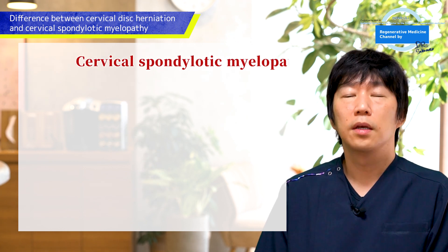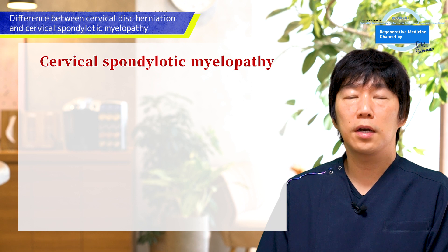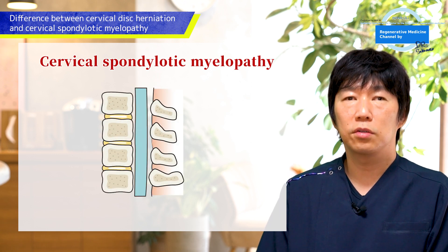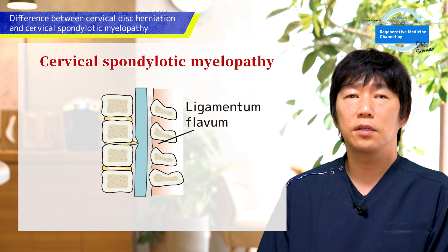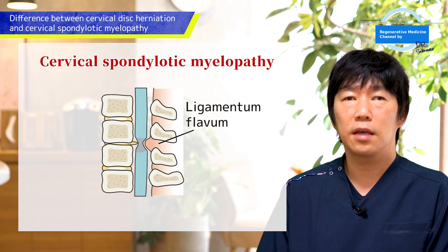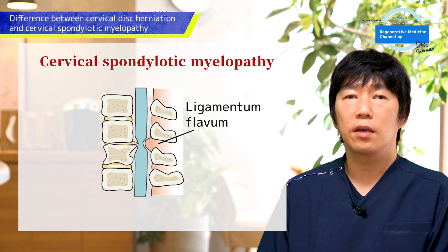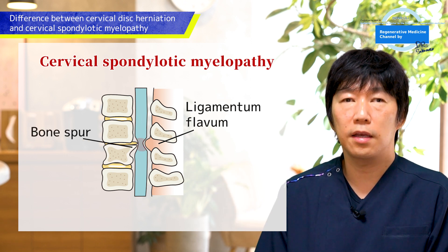Cervical spondylotic myelopathy has similar symptoms to cervical disc herniation, but the causes are a little different. Here, the spinal cord and the spinal canal is not only pressured from the front like a cervical disc herniation. The structure called ligamentum flavum behind the spinal cord thickens as one ages. This causes the spinal canal to narrow and results in pressuring the spinal cord. In addition, the vertebral body deforms and creates bone spurs, which compress the nerves too.